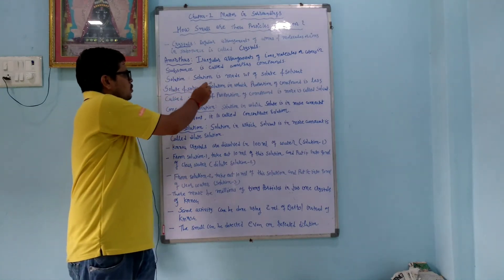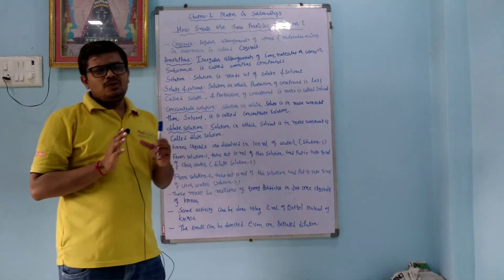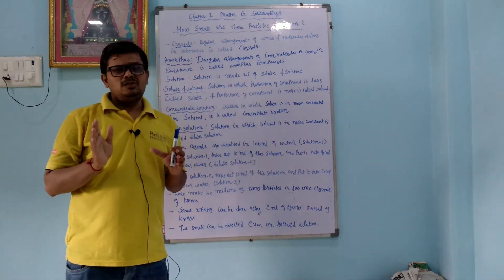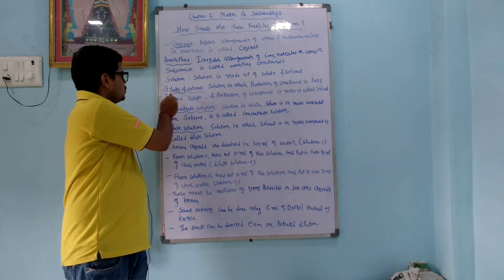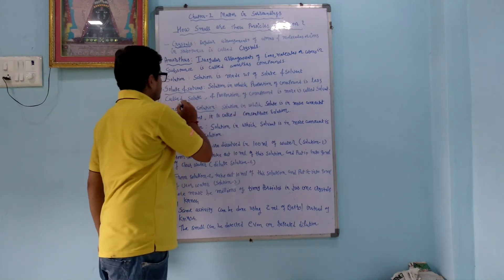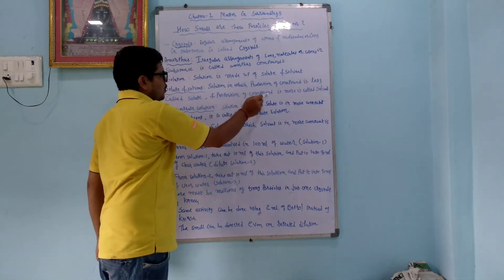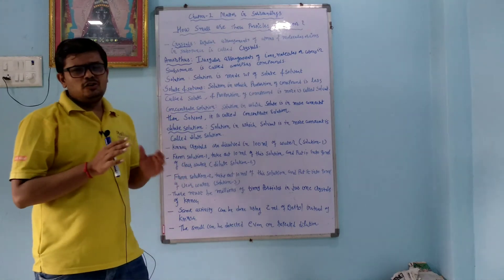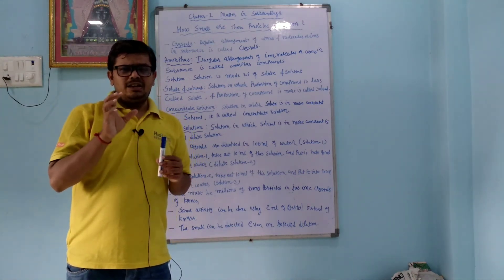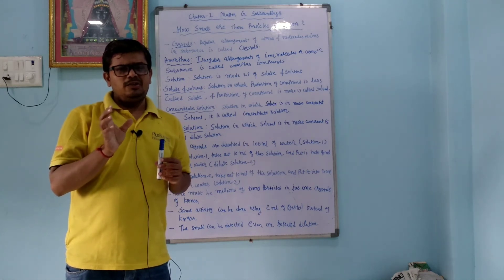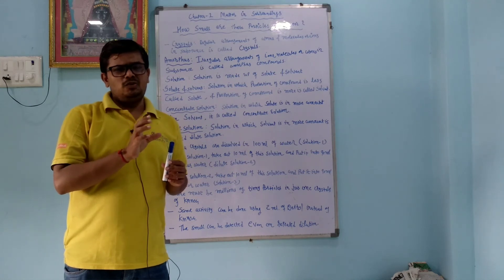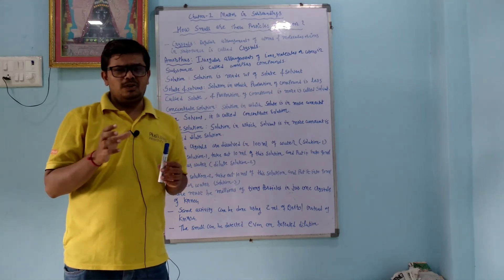A solution is made up of two components: solute and solvent. The compound present in the lesser proportion is called the solute, and the compound present in the greater proportion is called the solvent. For example, if sugar is dissolved in water, sugar is the solute and water is the solvent.